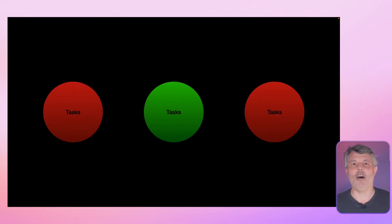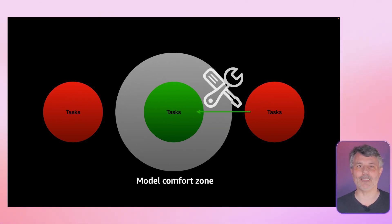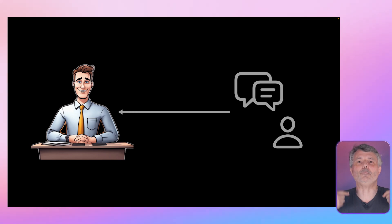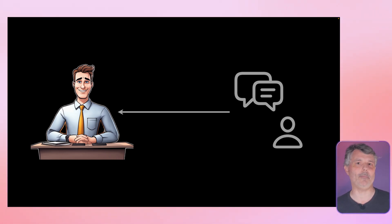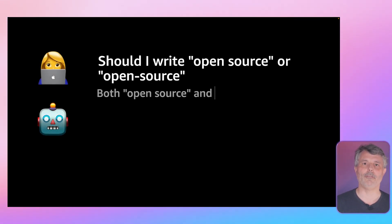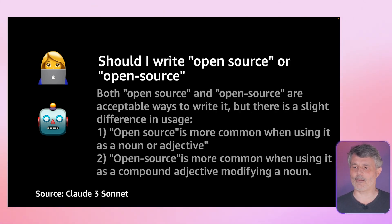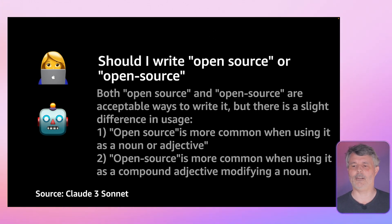Instead of extending my model's comfort zone, what if I give my model new tools to let it accomplish the task I want while staying within its existing comfort zone? The first technique is not to teach Paul anything — instead I can ask Paul questions that he can answer using his existing knowledge and capabilities. For example, if I ask 'Should I write open source with or without a hyphen?', a generic foundation model will give a generic answer, which is not incorrect but not really helpful.